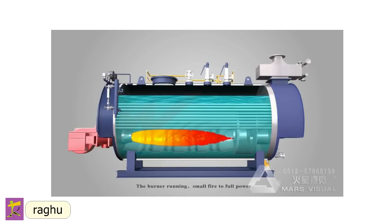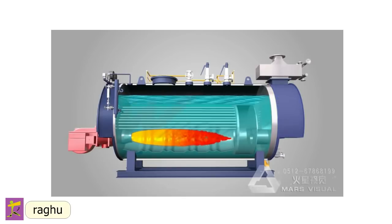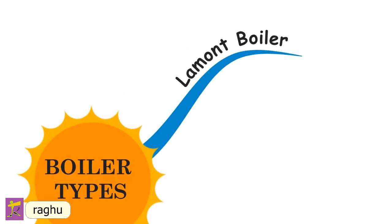A boiler includes a firebox or furnace to burn the fuel and generate heat. The generated heat is transferred to water to make steam. A La Mont boiler is a type of forced circulation water tube boiler in which the boiler water is circulated through an external pump through long, closely spaced tubes of small diameter. A mechanical pump is employed to ensure adequate and positive circulation.